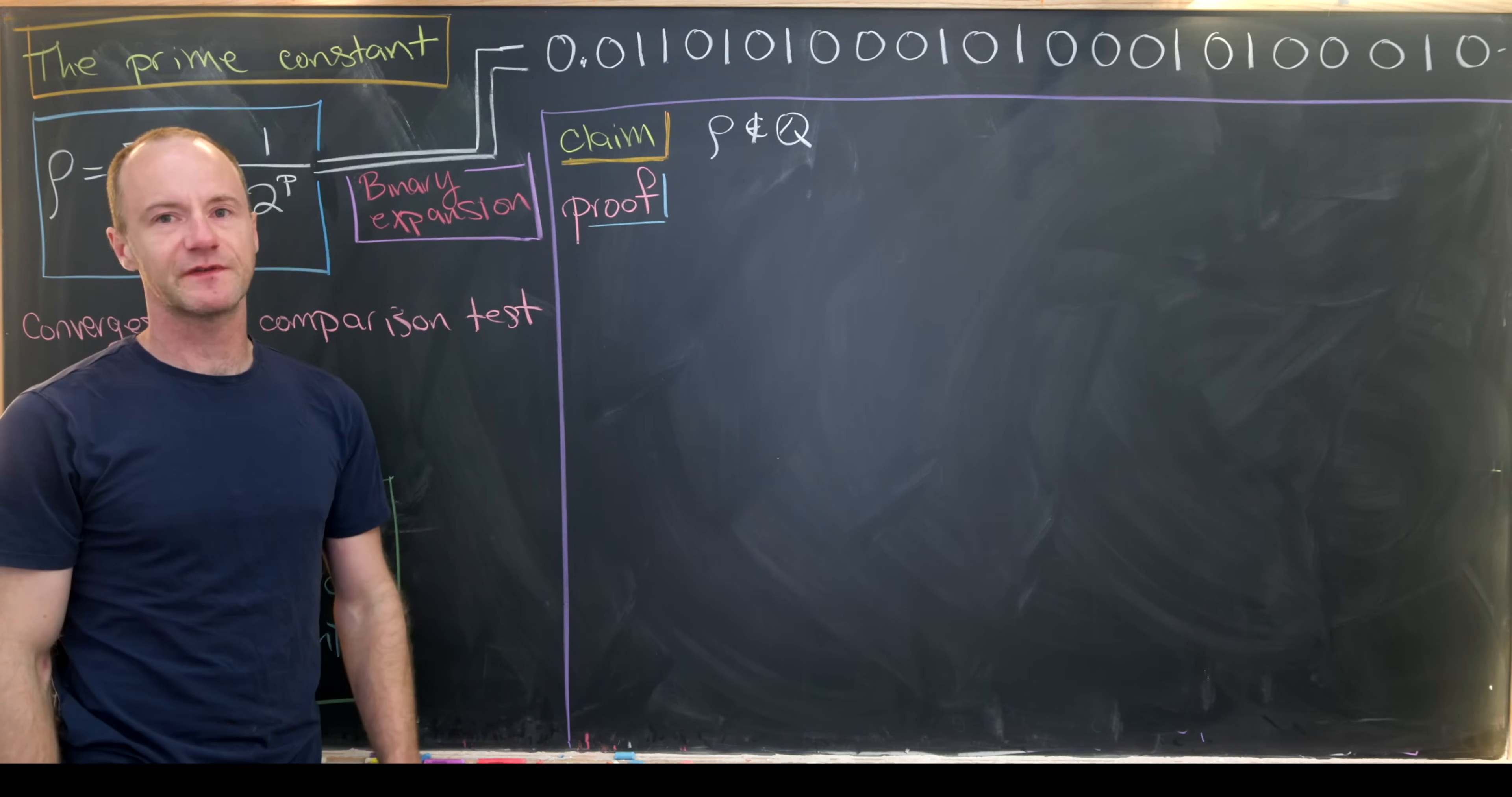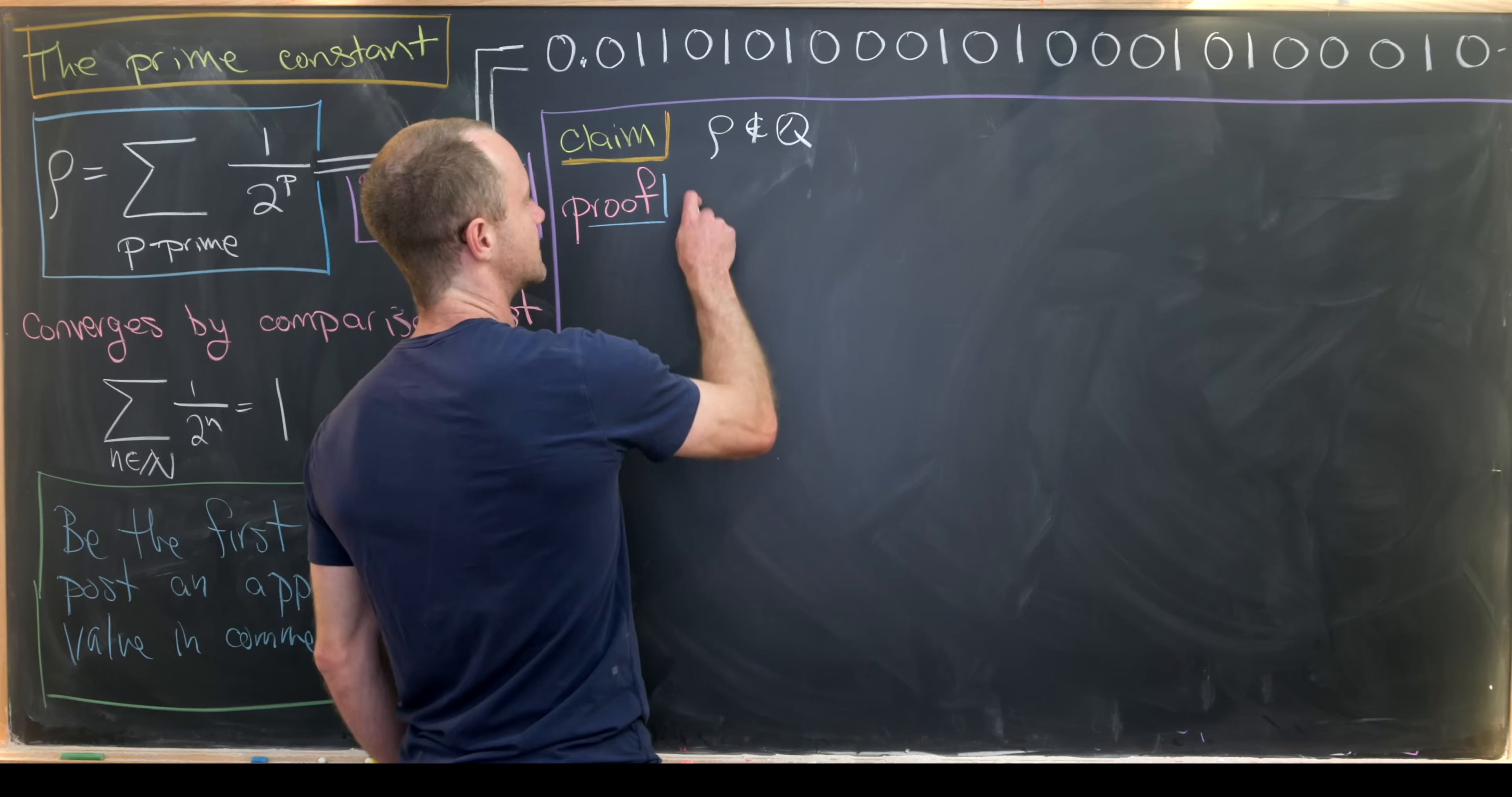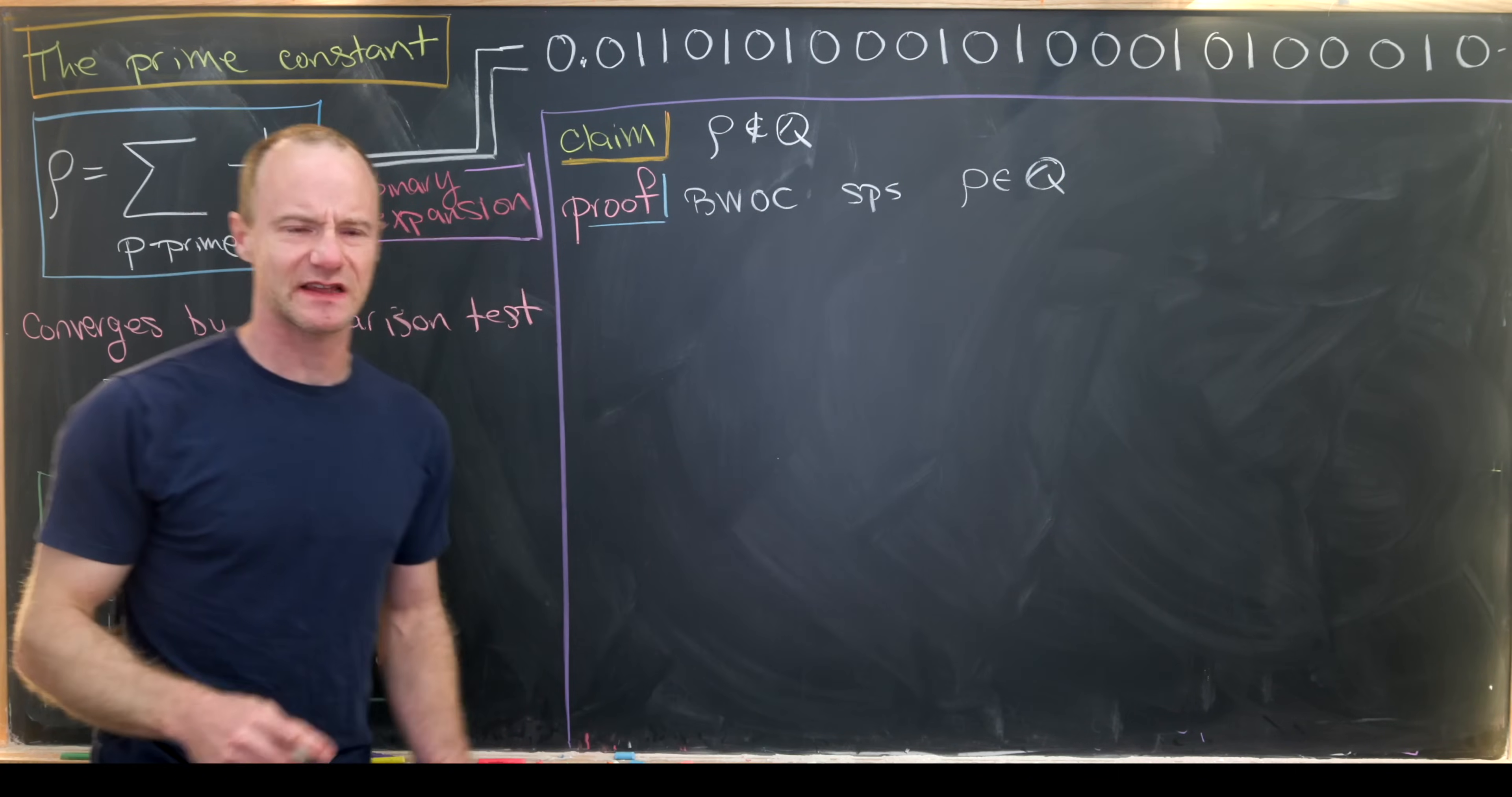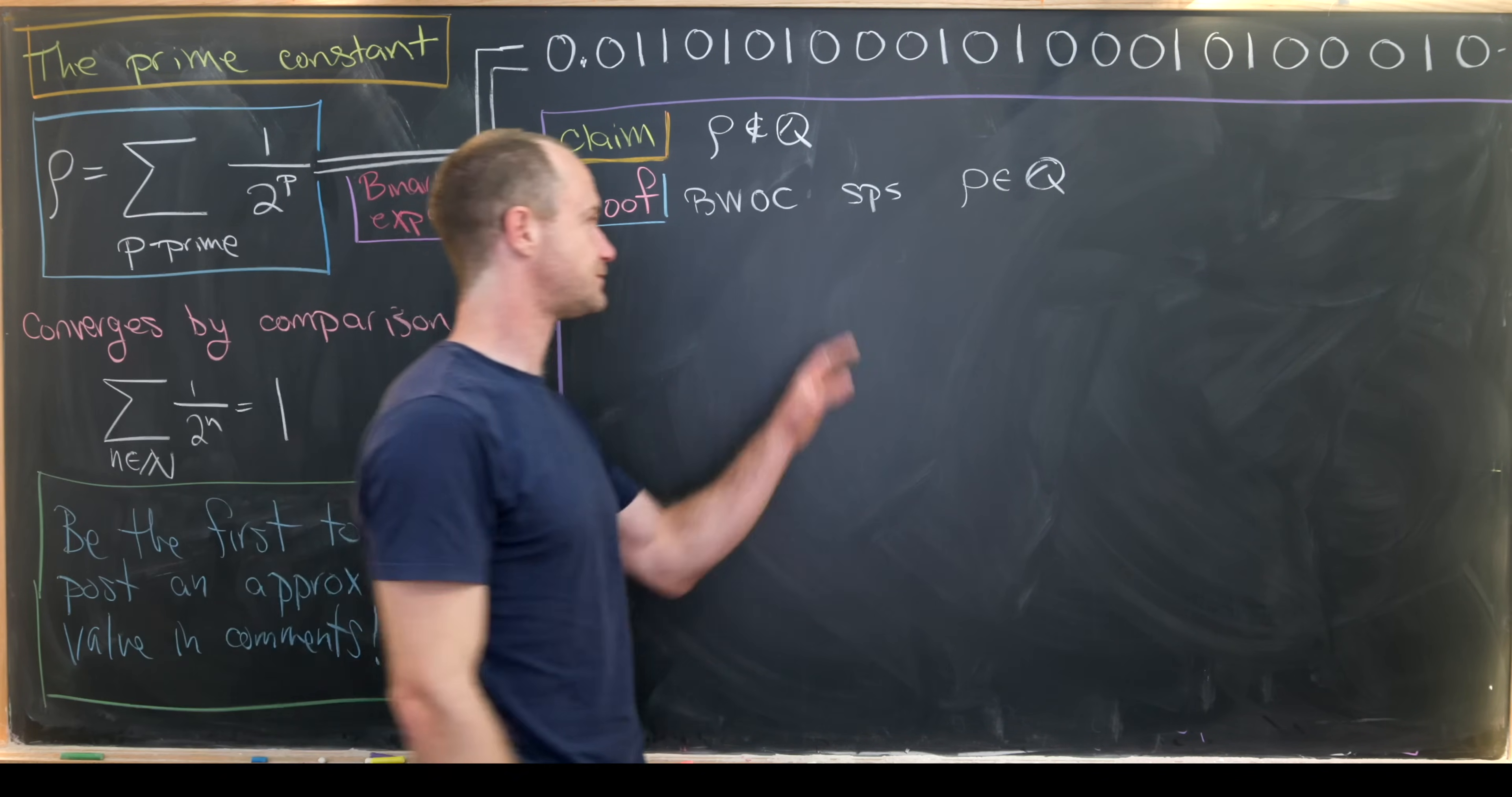So the main purpose of this video will be to prove that rho is irrational. And I think this has a pretty nice proof. So let's get into it. So by way of contradiction, let's suppose that it is rational. And I think this is an interesting thing that happens with almost all irrationality proofs is that they're done by way of contradiction.